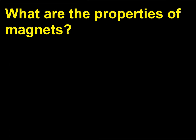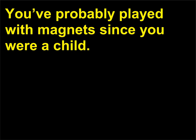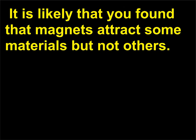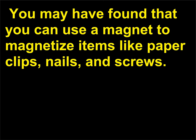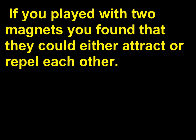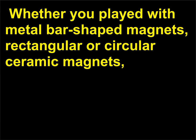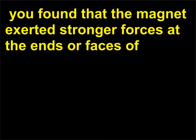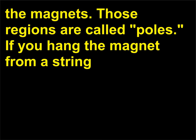What are the properties of magnets? You probably played with magnets since you were a child. Magnets attract some materials but not others. You can use a magnet to magnetize items like paper clips, nails, and screws. Two magnets can either attract or repel each other. Whether metal bar-shaped magnets, or rectangular or circular ceramic magnets, the magnet exerts stronger forces at the ends or faces — those regions are called poles.